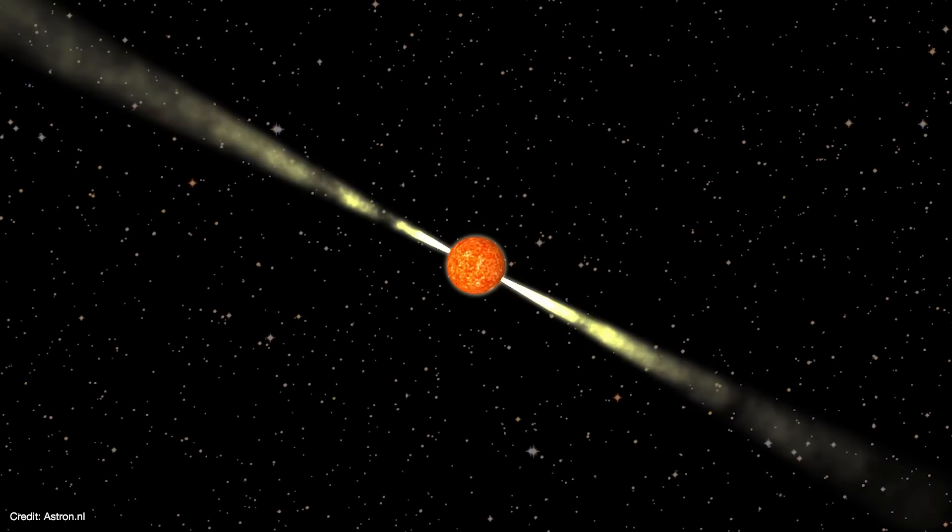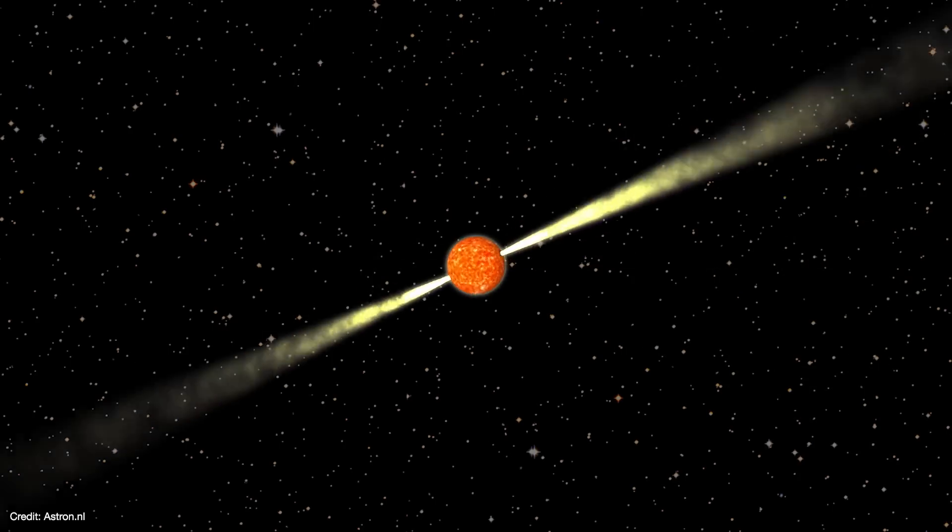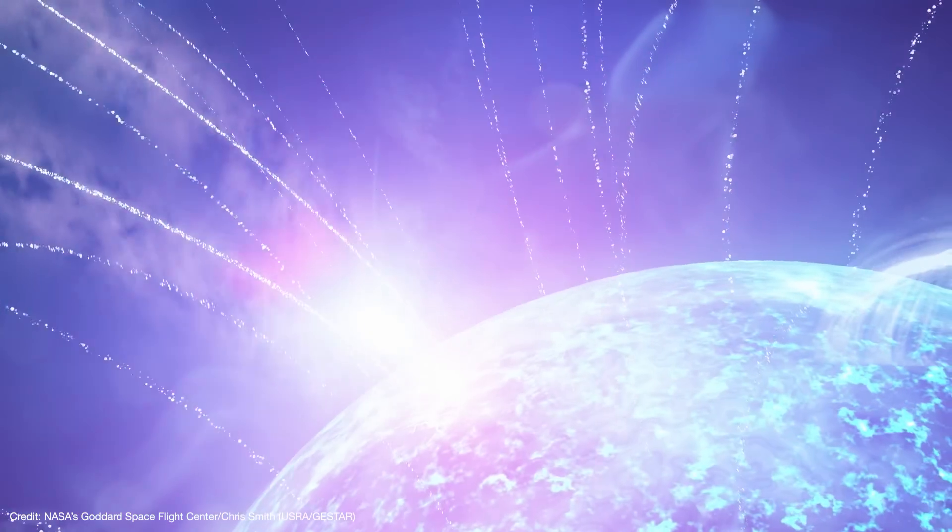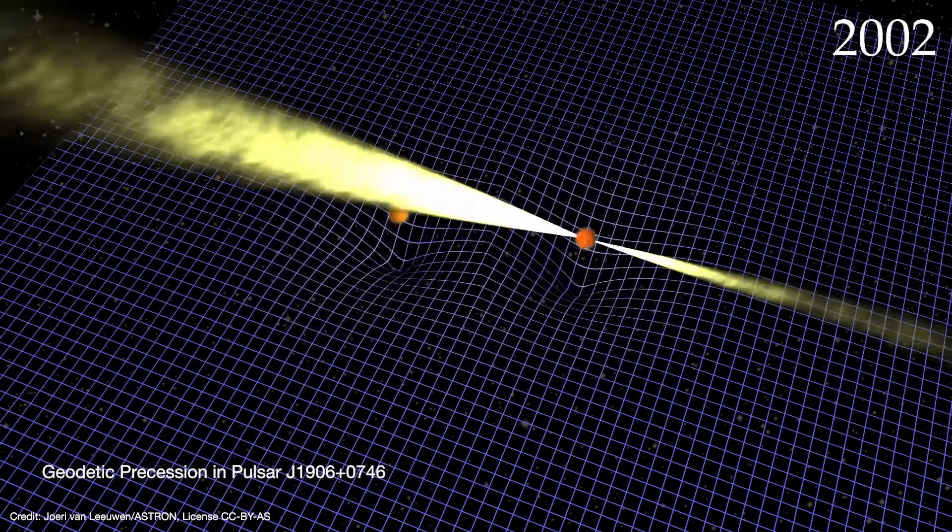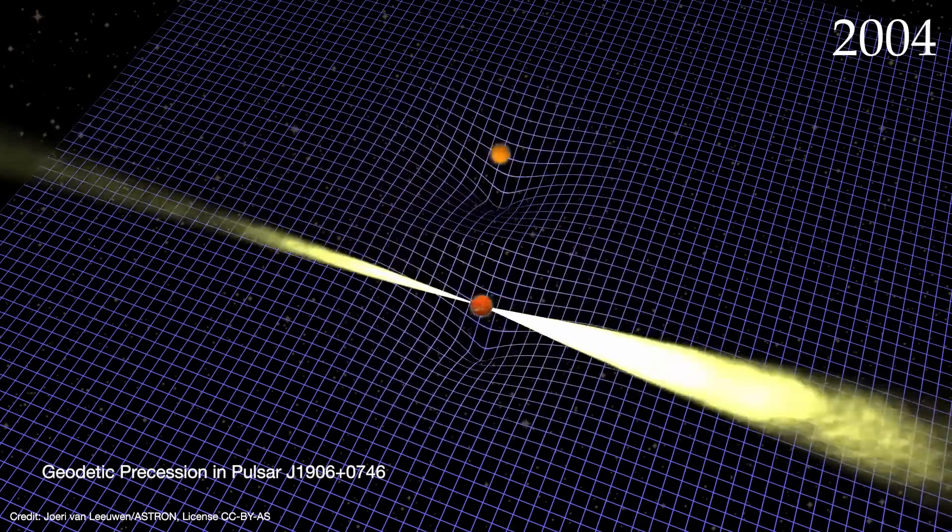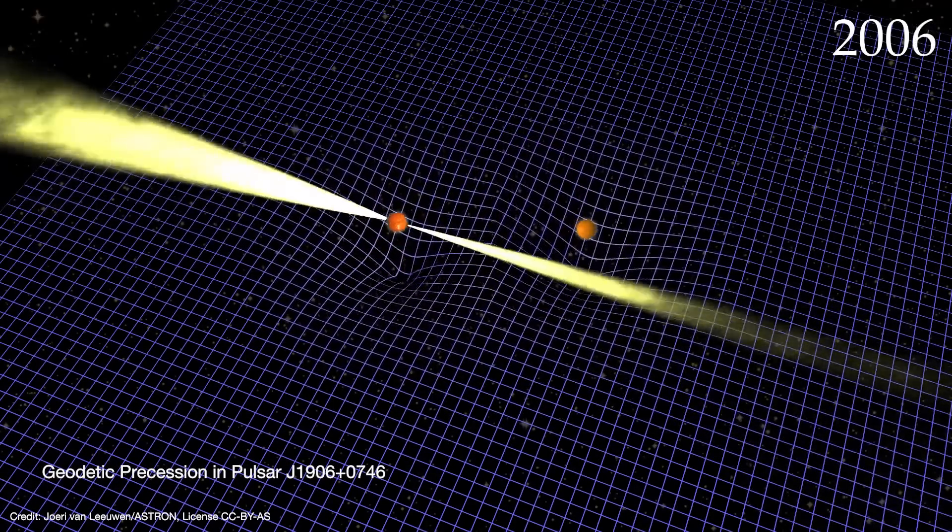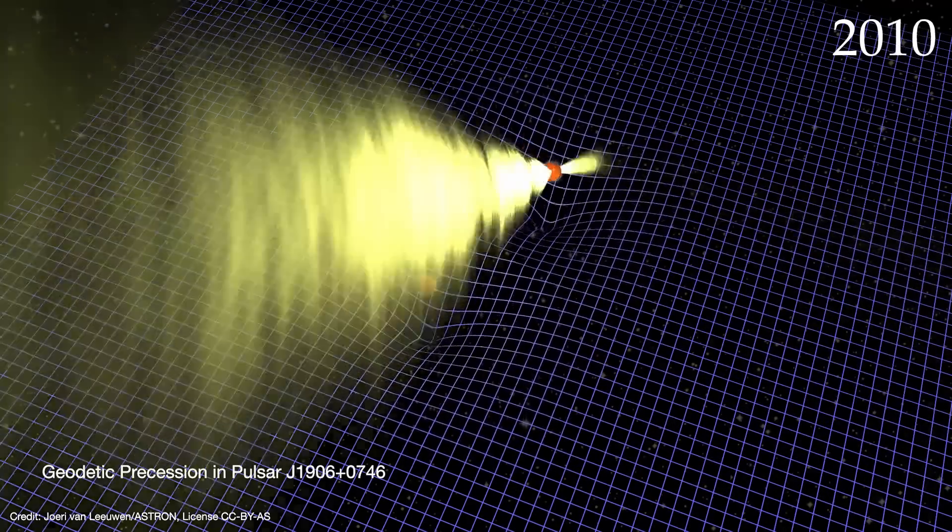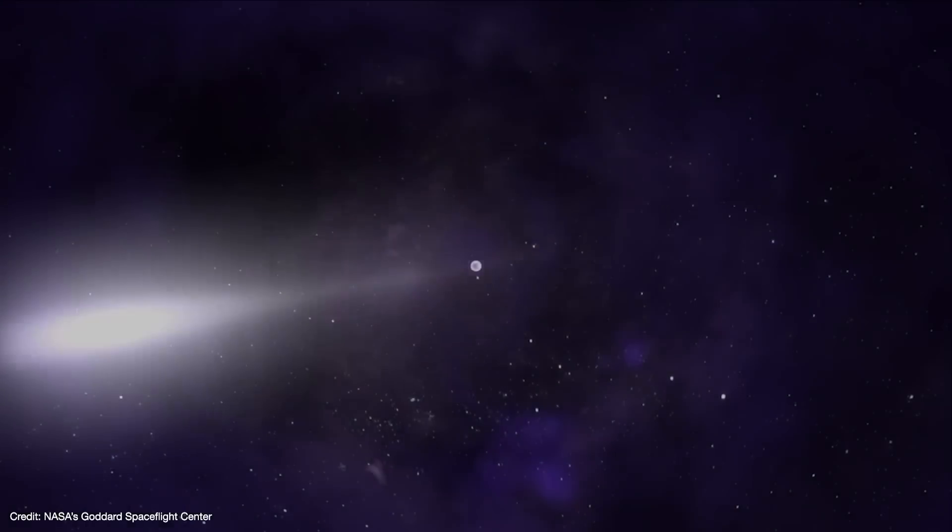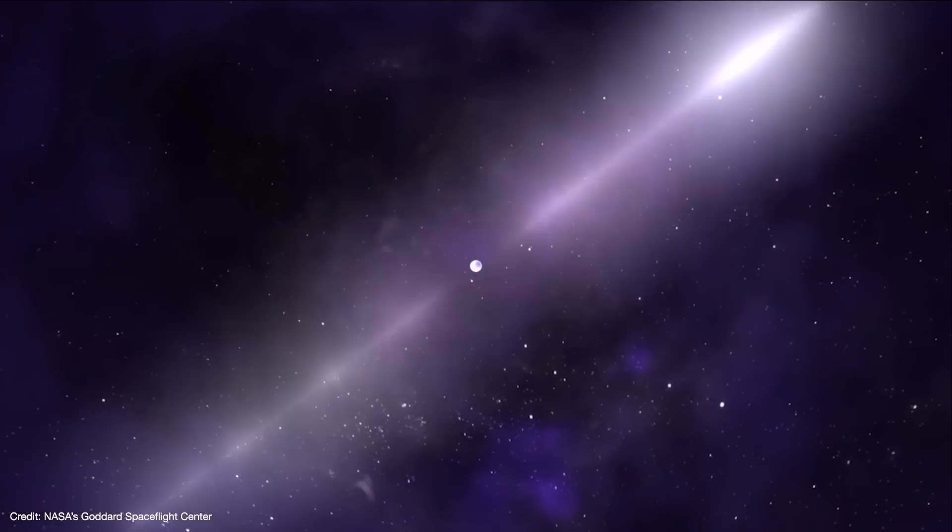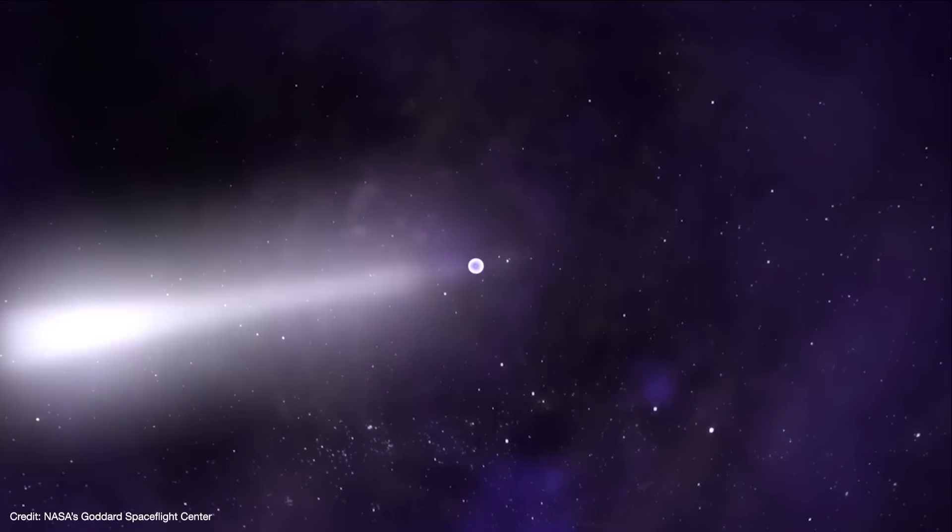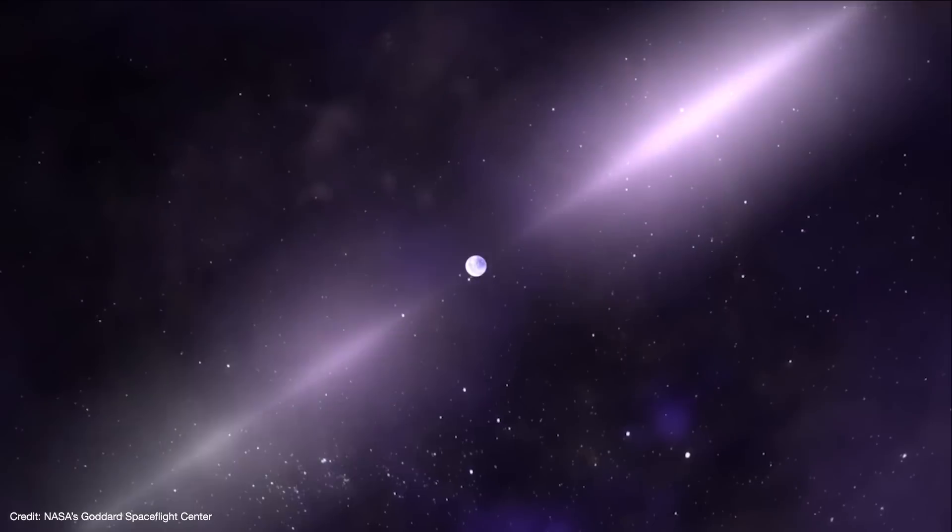However, during that time, a lot of things can go wrong with our pulsar clock. Starquakes can cause sudden changes in the pulsar's spin. The pulsar might wobble or precess ever so slightly. The pulsar could be part of a binary system, and even the interstellar medium surrounding the pulsar will slow down its light. And yet, despite all of that noise, we need to be able to extract a variation in the pulsar timing on the order of just tens of nanoseconds over many, many years.